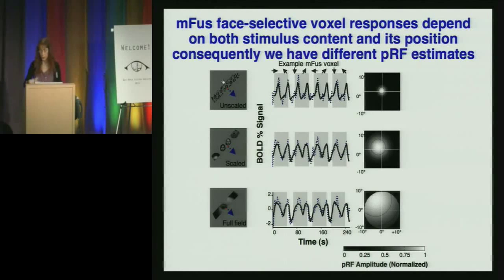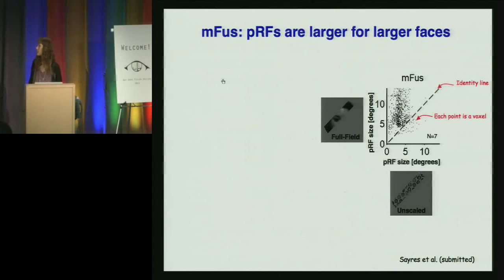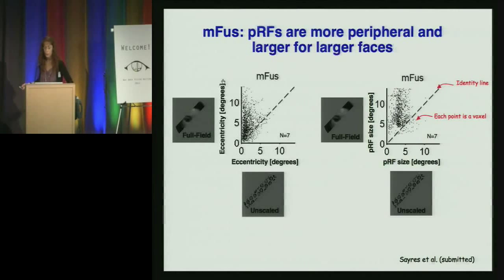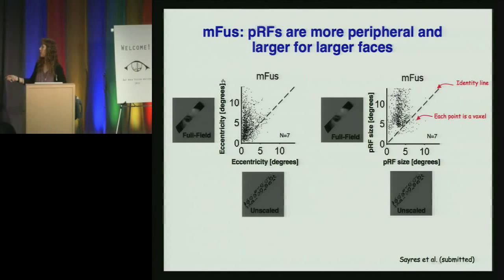This is just one example voxel, but we can do this analysis across the population of voxels. Here I'm showing you all voxels from the mid-fusiform region — each point is a voxel. I'm showing you the estimated population receptive field size for the large faces compared to the population receptive field size measured from the small faces, with the identity line shown. What's very clear is that for large faces we get larger estimated receptive fields compared to the small faces. Furthermore, it's not only that they're larger but they're also shifted more peripherally. You can see that the eccentricity — where the center of the receptive field is — is more peripheral for the large faces compared to the small faces. What I've illustrated for the single voxel is generalizable across the population of voxels in the brain.